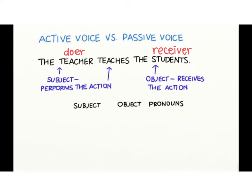In English, we have subject and object pronouns. For example, I is a subject pronoun, while me is an object pronoun. He is a subject pronoun, while him is an object pronoun. She is a subject, and her is an object, and so on.